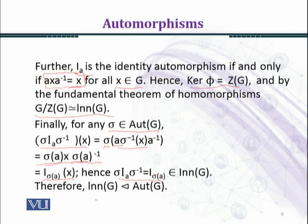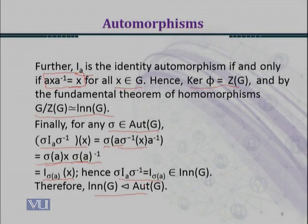Hence, Inn(G) is the normal subgroup of Aut(G).